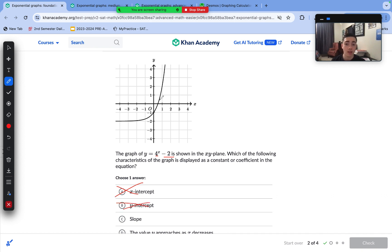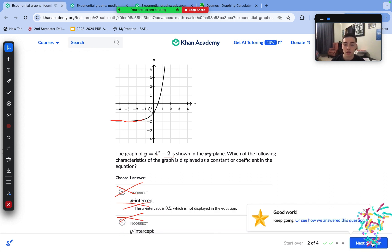Slope—remember, this 4 is an increasing rate. It is not the actual slope, because it is not a straight line. And then the value y approaches as x decreases. We can see as x decreases here, y is approaching negative 2, which is shown in our equation as negative 2. So answer choice D is correct.